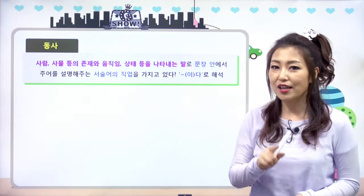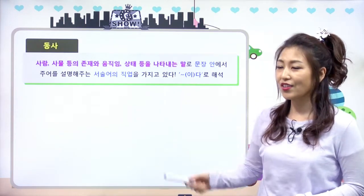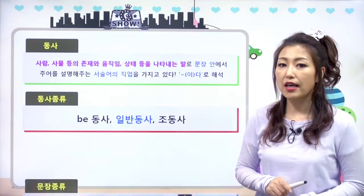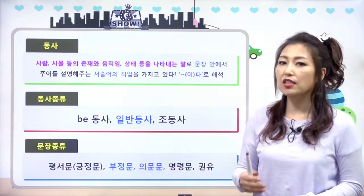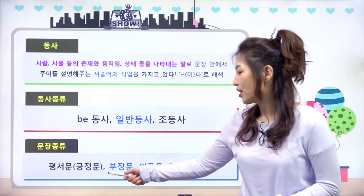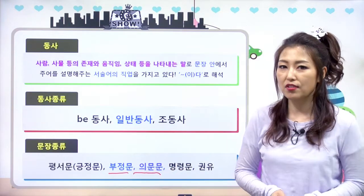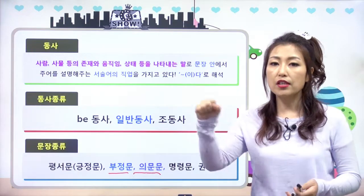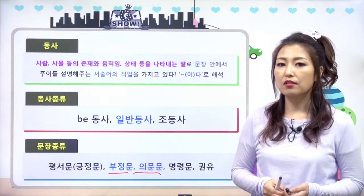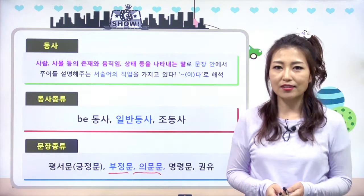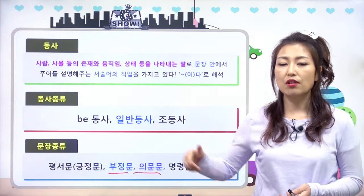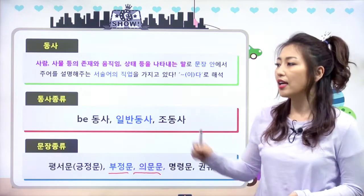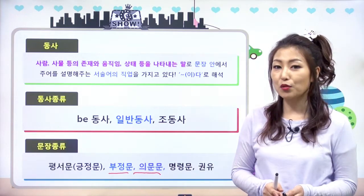동사의 뜻 잘 알고 있죠? 동사의 종류 중에 우리 지금 일반 동사를 함께 알아보고 있고요. 지난 시간에 평서문·긍정문 알아봤었고, 이번 시간에는 부정문과 의문문에 대해서 알아볼 거예요. 조동사, 비동사를 제외한 모든 동사를 일반 동사라고 한다고 했잖아요. 그래서 일반 동사의 사용법에 대해서 차분차분히 알아보는 거예요.